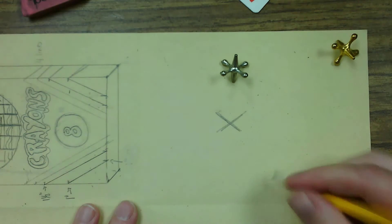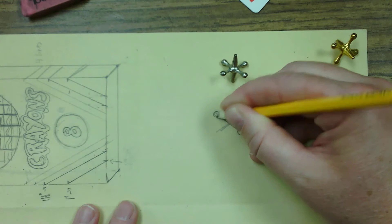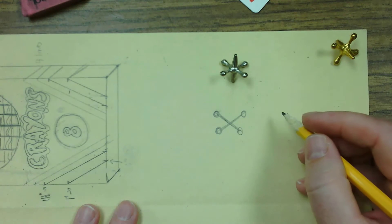So start with an X. Make it a pretty wide X, just like this. And then at the end of each line, draw a circle.